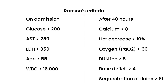Why is Ranson's criteria important? If you have fewer than 3 of these findings in total, the mortality is about 5% or less. But if you have 3 or more of Ranson's criteria, the mortality can be very high — 15 to 20% — which is quite significant.